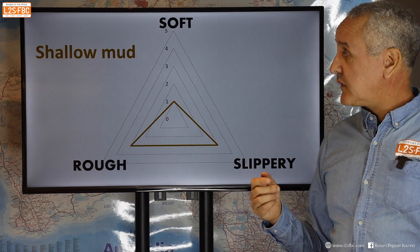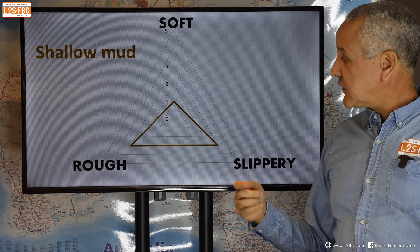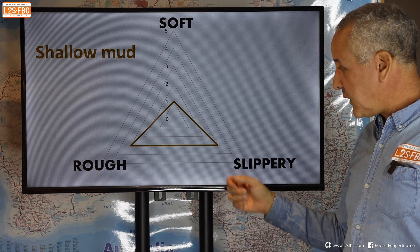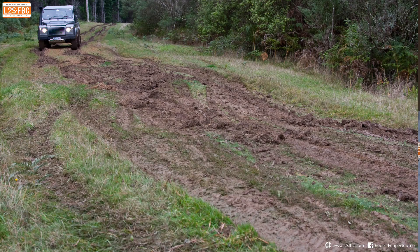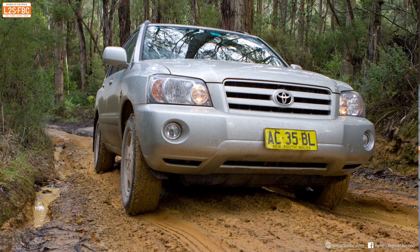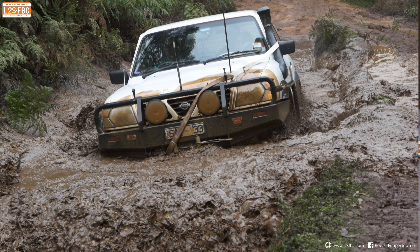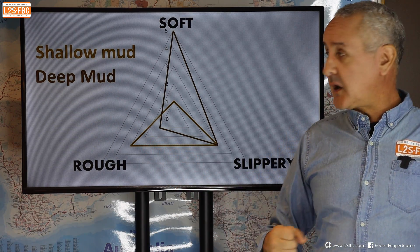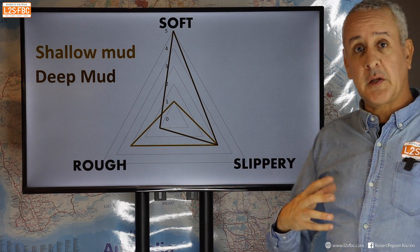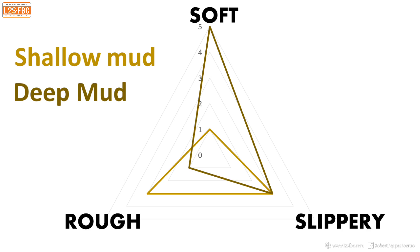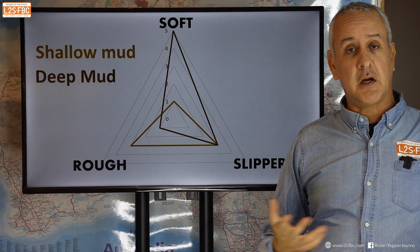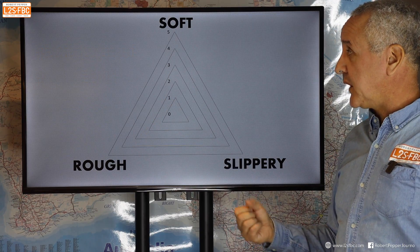Looking at mud in more detail: shallow mud on a hard surface isn't really super soft, but it's certainly pretty slippery, and there might be some ruts making it a bit rough. Deep, chop-suey peaty mud is unlikely to be rough because it's just so soft. It's earth and water — a very slippery combination — so it's high on slippery, high on soft, but not really rough. You can't really categorize one terrain as always being the same thing.